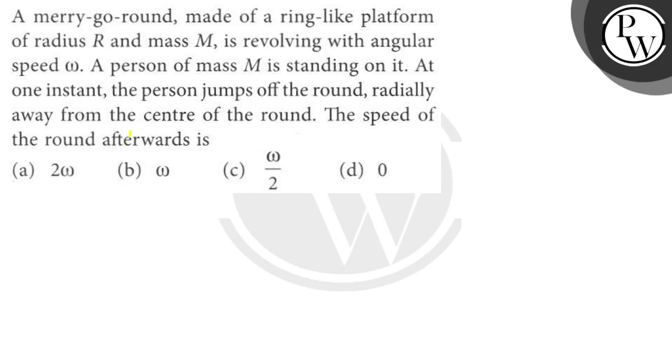Hello everyone, let's read the question. The question says a merry-go-round made of a ring-like platform, radius capital R and mass capital M, is revolving with angular speed omega. A person of mass capital M is standing on it.